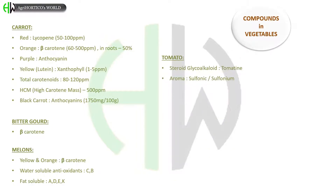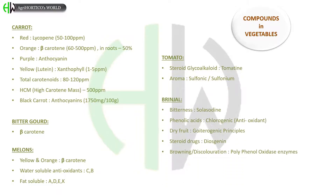Now let us learn about compounds in vegetables. In tomato, the steroid glycoalkaloid present is tomatine. Aroma in tomato is due to the presence of sulfonic or sulfonium compounds. In brinjal, bitterness is due to the presence of soladine. The phenolic acid seen in brinjal is chlorogenic acid, an antioxidant. Dry fruit of brinjal consists of goitrogenic principles. Steroid drugs contain diosgenin as a major component. Browning or discoloration of brinjal occurs due to the presence of polyphenol oxidase enzymes.